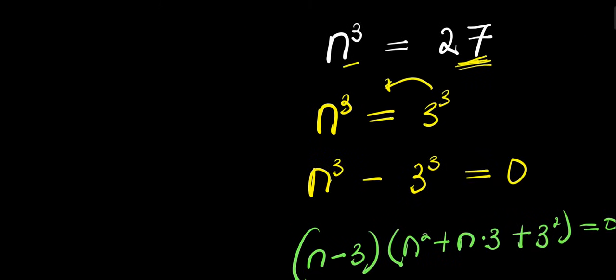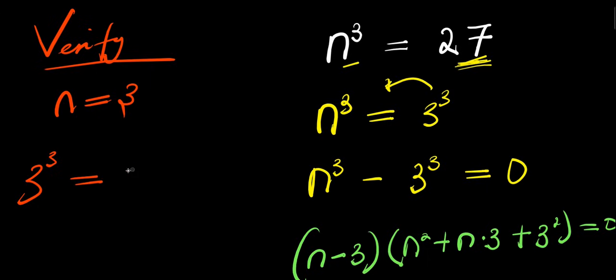So we can verify: if n = 3, then 3³ = 27. So this is 27 = 27.